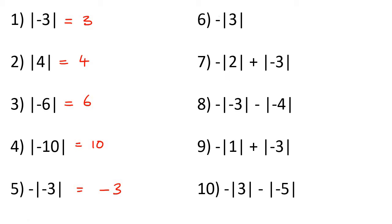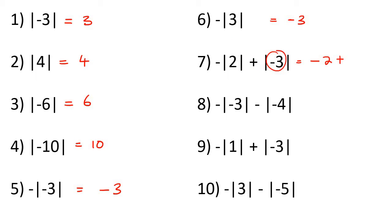For number 6, don't worry about the negative right now — just look at the inside. That part gives 3, but then there is still a negative in the front, so it would be negative 3 as the final answer. For this one, the negative is already there so just leave it. Then this is just a 2, then there's a plus, and then the absolute value part becomes 3. So you have minus 2 plus 3, which is 1.